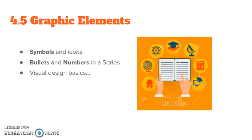Graphic elements: symbols and icons are useful in signaling small elements on a website that appear over and over again. They can signal certain features, activities, audio, video, but they must be consistent throughout the course. Bullets help items stand apart, and numbers are great for identifying sequential steps, ranks, and priorities. Keep paragraphs short and skip a line between each paragraph to increase white space.